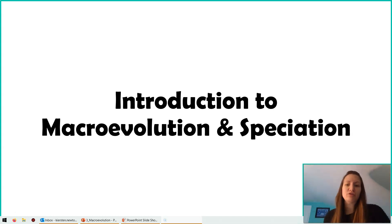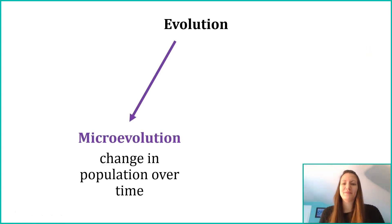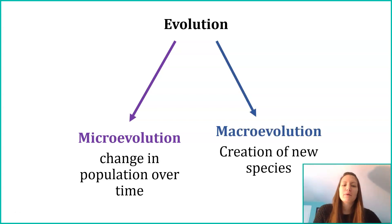Related to evolution, another branch is macroevolution. This term gets used interchangeably with speciation, and they're both referring to the same thing. If we take a look at evolution, we have that microevolution, small changes in a population over time. But now we're going to focus on macroevolution, evolution on a much larger scale. This is looking at the creation of new species. How did we get lions? How did we get penguins? How did we go from one common ancestor to this diversity of life that we see today?